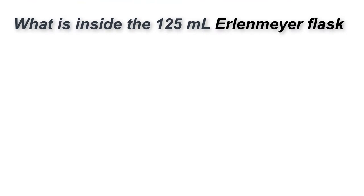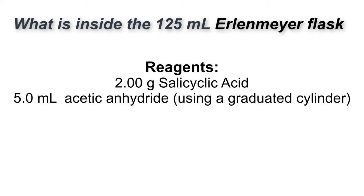Going into our 125 mL Erlenmeyer flask is going to be salicylic acid. We're going to put two grams of that in, and then we will also be putting in five mL of acetic anhydride.